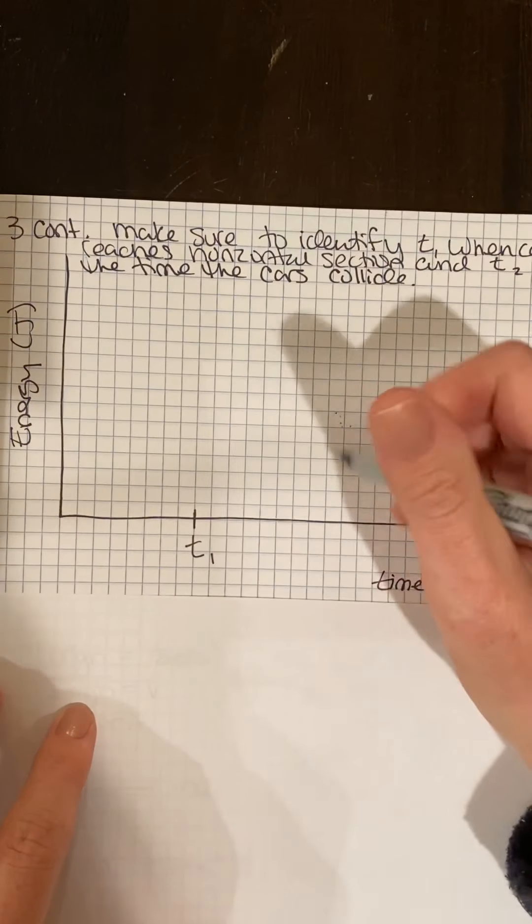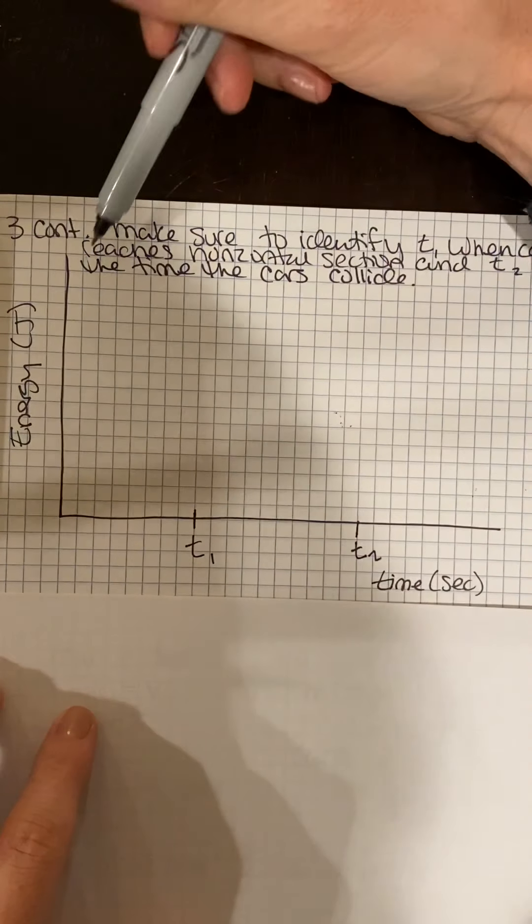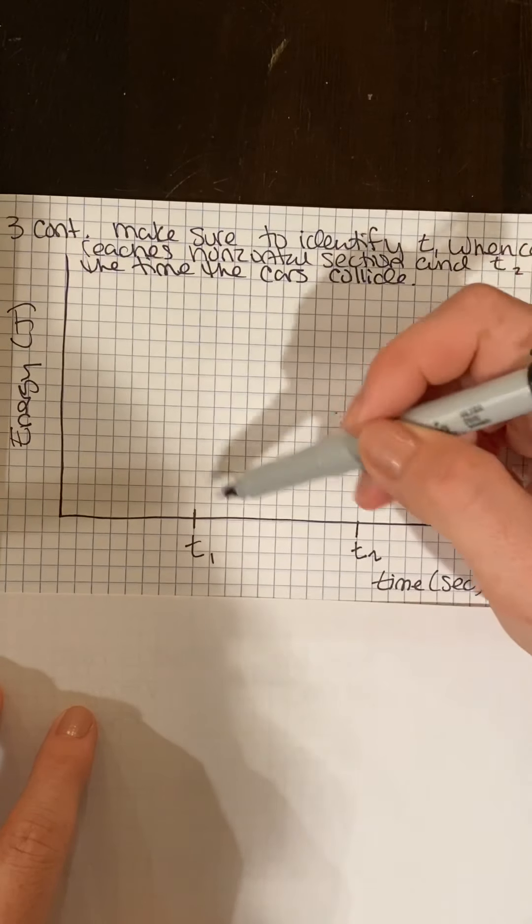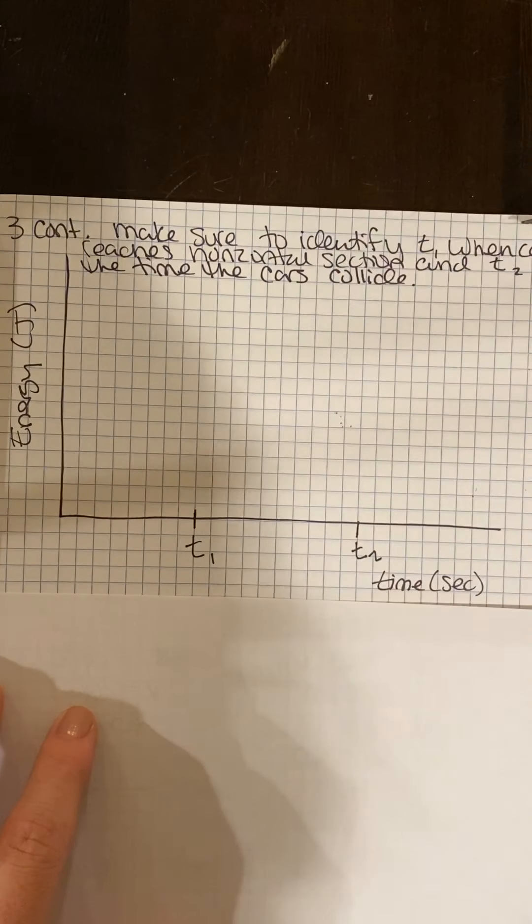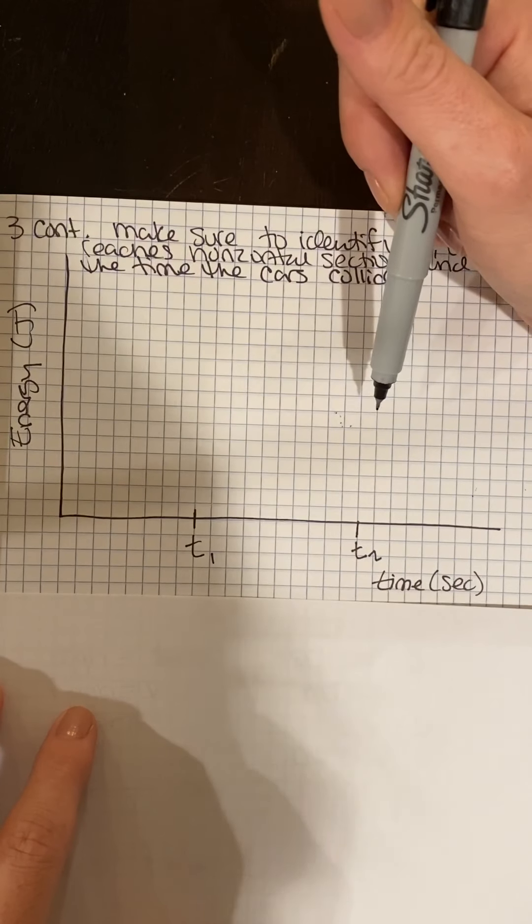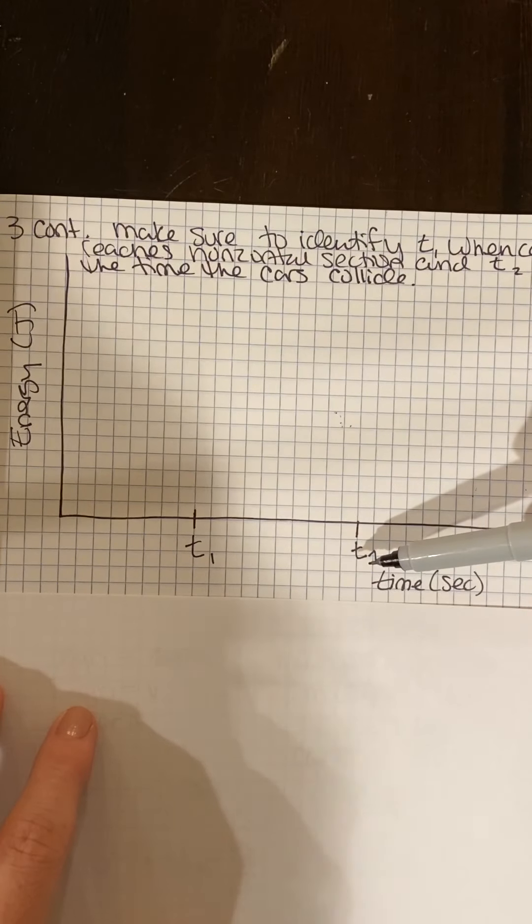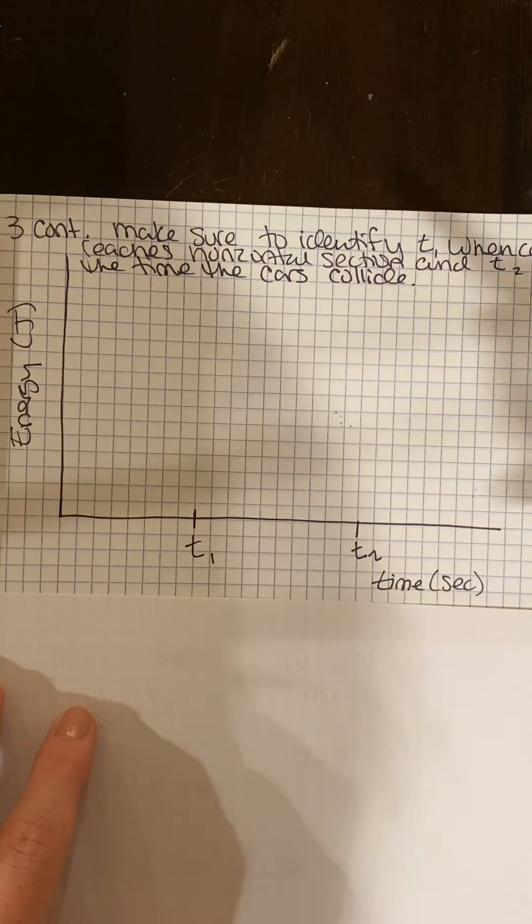And then at time 2, this is when the two cars collide. So what's going on with our energy from the time that car A is horizontal on the track? Car B shouldn't be on here at all because it has no energy. But at this time that they collide, car B does have an energy. So what kind of energy does it have and what does it look like compared to the type of energy from cart A? This one we're just sketching. So I'm looking for, is it a steady slope? Is it a curved slope? Is it a positive slope? Is it a negative slope? And make sure that you're writing both your potential energy and your kinetic energy on there.